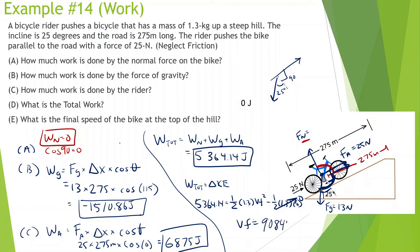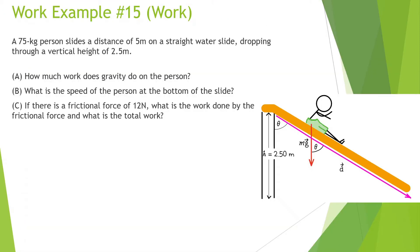It is flying up this hill by the end. A lot of times people get tricked by these incline problems. Next: a 75 kg person slides a distance of 5 meters on a straight water slide, dropping through a vertical height of 2.5 meters. How much work does gravity do on the person?